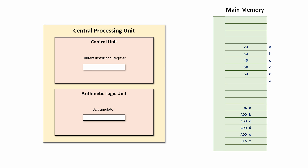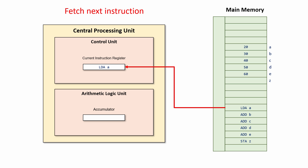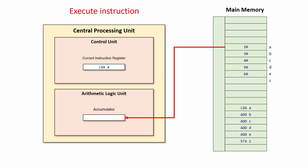The next step is to fetch the next instruction. The instruction is copied from the main memory into the current instruction register. This is, of course, an abstract model of the CPU which doesn't explain everything — for example, this model doesn't have any cache memory, and there are a few other registers involved in fetching an instruction. But it's okay to leave out some details, because we're only concerned with the role of the accumulator. The current instruction is now executed. LDA A means load into the accumulator a copy of the contents of variable A. So the value 20 is copied from the main memory into the accumulator.